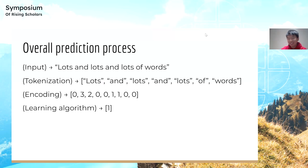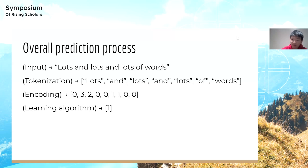Let me go over the overall prediction process. The input — lots and lots of words — goes through tokenization, converting to 'lots, and, lots, and, lots, of, words.' Then encoding converts it to a numeric vector like [0,3,2,0,0,1,1], where 3 represents 'lots,' 2 represents 'and,' and so on. Finally, the learning algorithm outputs a prediction of 1 (positive) or 0 (negative).